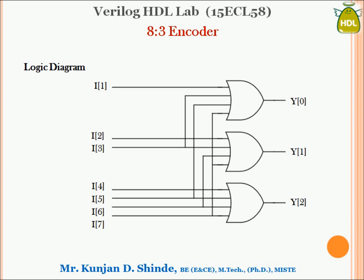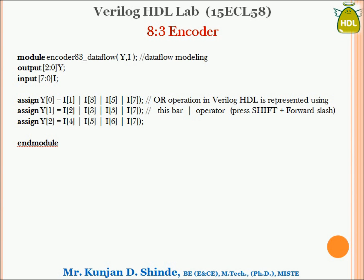Now we have the logic diagram as explained. Let us write down the Verilog HDL code for the 8-to-3 encoder, beginning with dataflow modeling. As per the logic diagram, output Y0 is enabled only when I1, I3, I5, or I7 are high — a simple OR operation. In Verilog HDL, OR operation uses the pipe symbol. The assign statement is used for dataflow modeling. Similarly, we write the equations for Y1 and Y2.